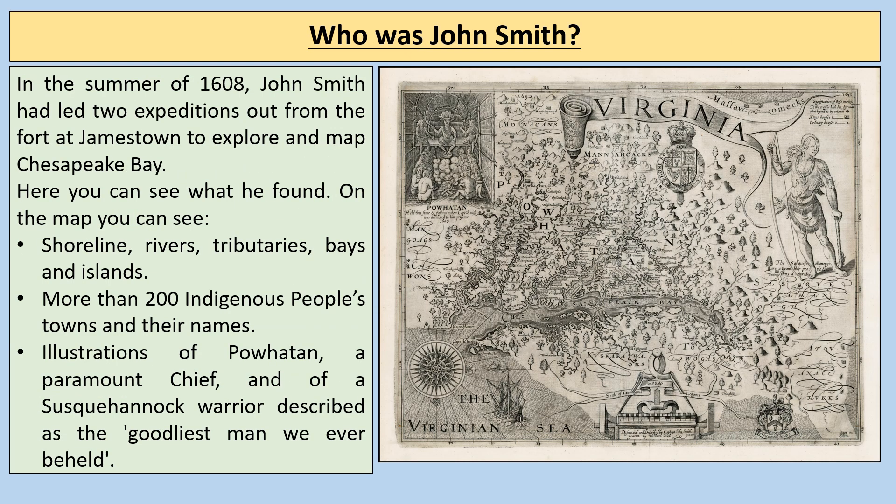John Smith is another important person. In the summer of 1608, he led two expeditions from the fort at Jamestown to explore and map Chesapeake Bay. On the map you can see shoreline, rivers, tributaries, bays and islands, more than 200 indigenous peoples' towns and their names, illustrations of Powhatan — a paramount chief — and of a Susquehannock warrior described as 'the goodliest man we have ever beheld.'